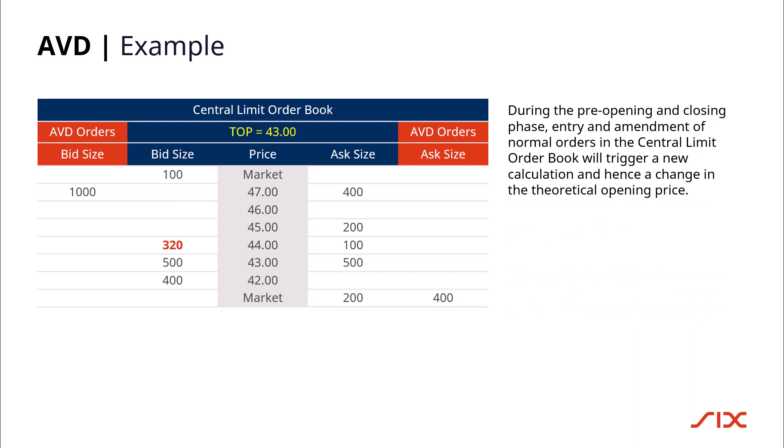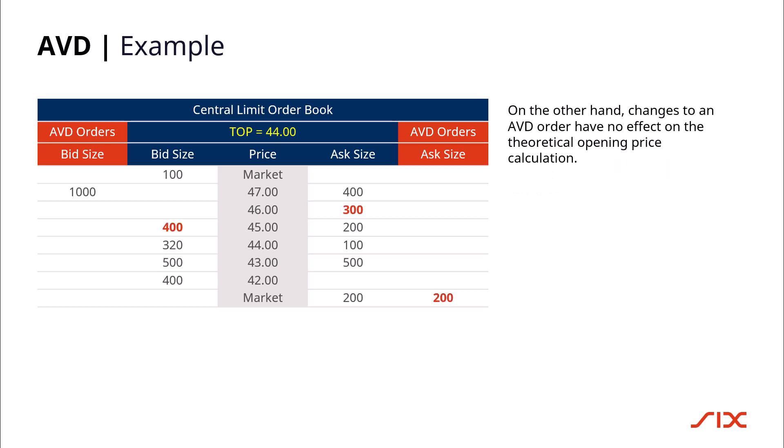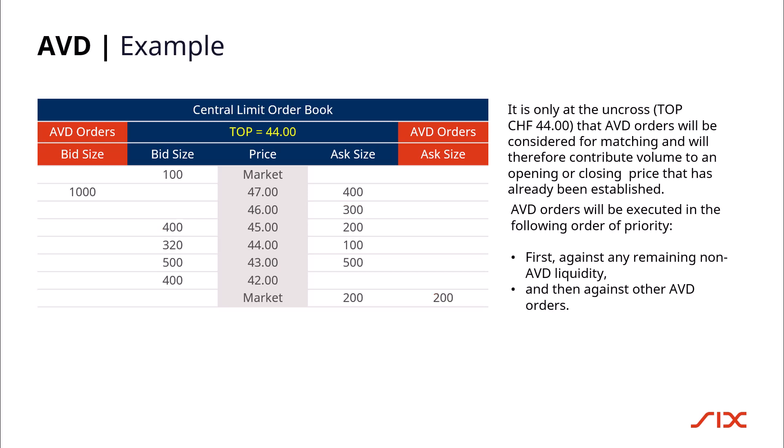During the pre-opening and closing phase, entry and amendment of normal orders in the central limit order book will trigger a new calculation and hence a change in the theoretical opening price. On the other hand, changes to an AVD order have no effect on the theoretical opening price calculation. It is only at the uncross at 44 Swiss francs that AVD orders will be considered for matching, contributing volume to an opening or closing price that has already been established.